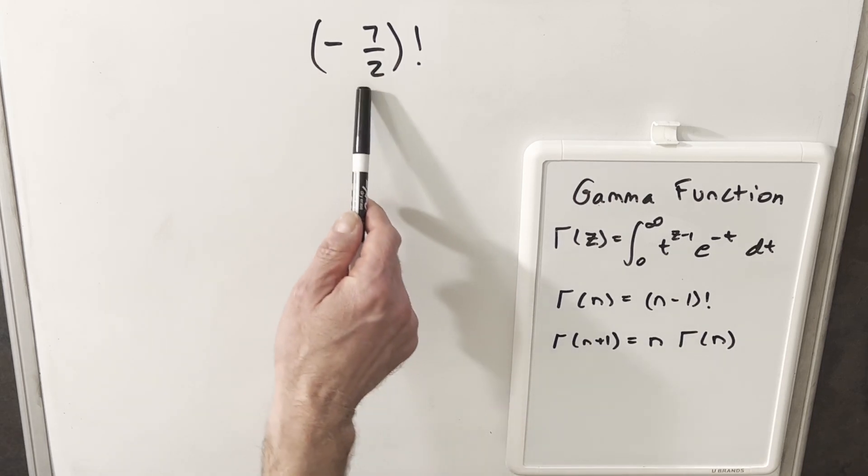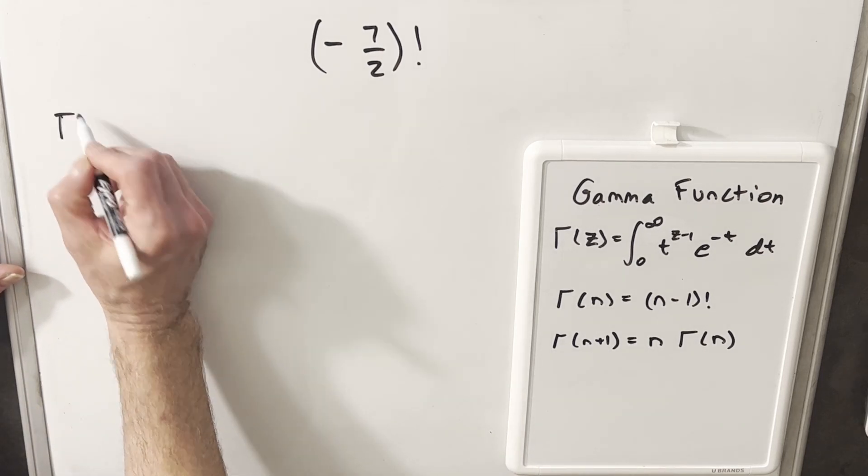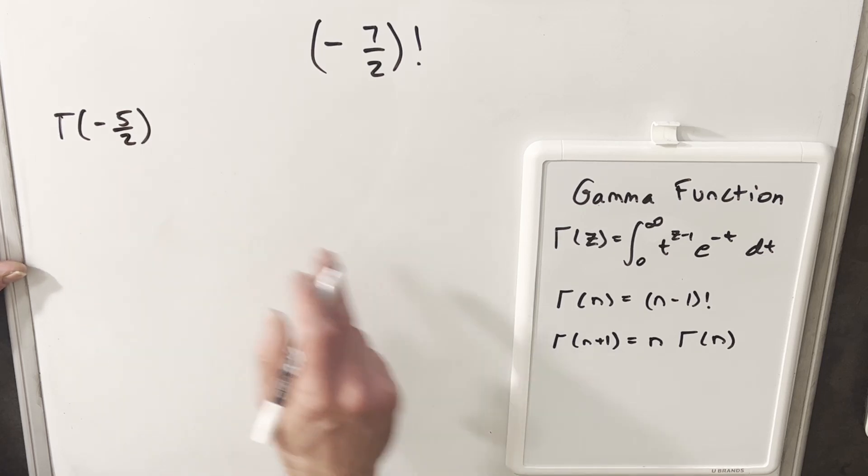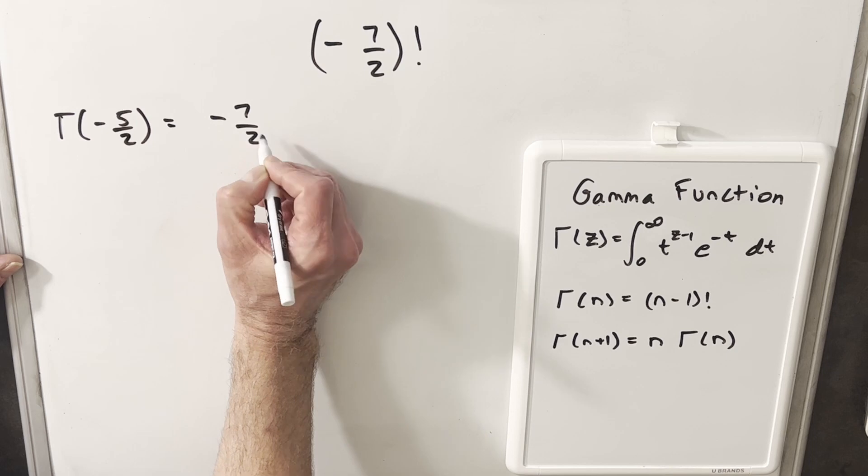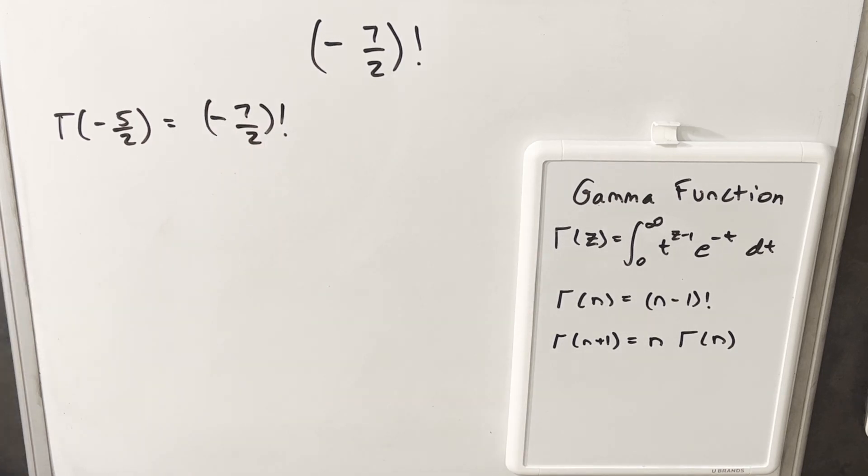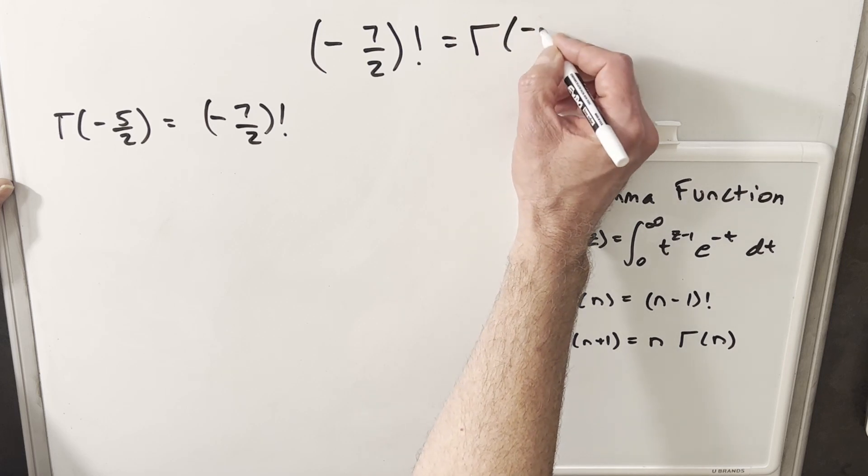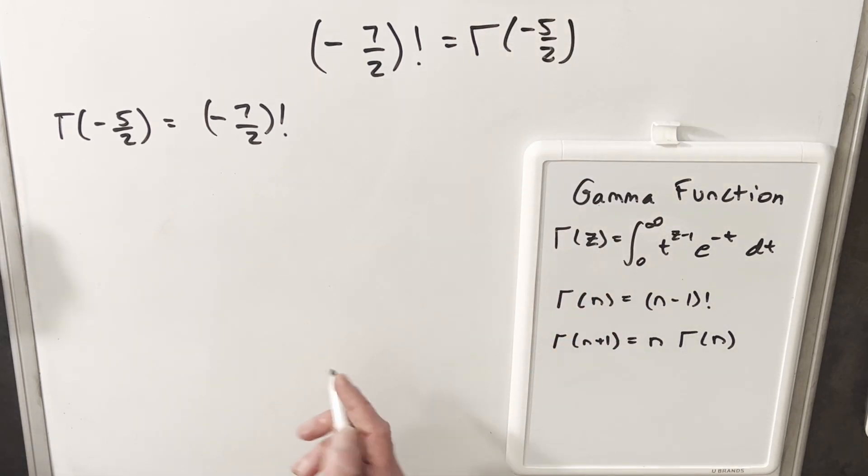So putting that into use with something like minus seven halves, let's just notice if we look at gamma of minus five halves, subtracting one from this using this formula, we have minus seven halves factorial. So then for this, what we're going to try to find is gamma of minus five halves, and let's put that in terms of this integral. Let's see what that looks like.